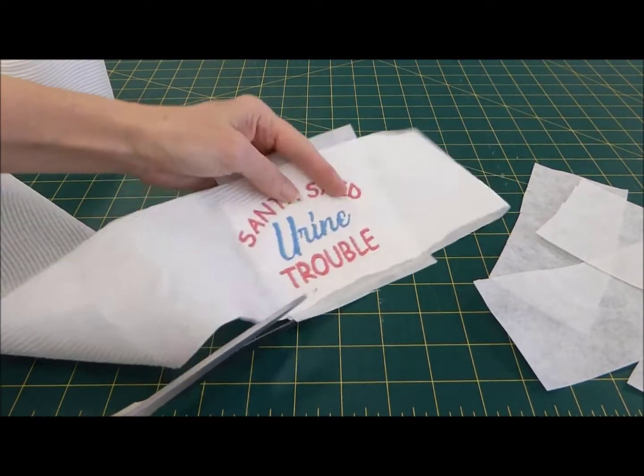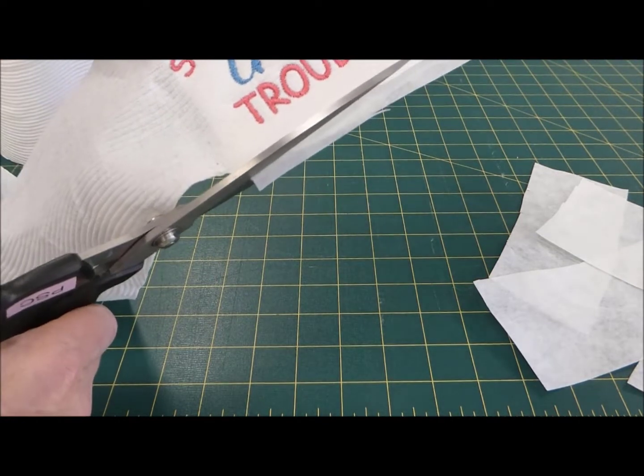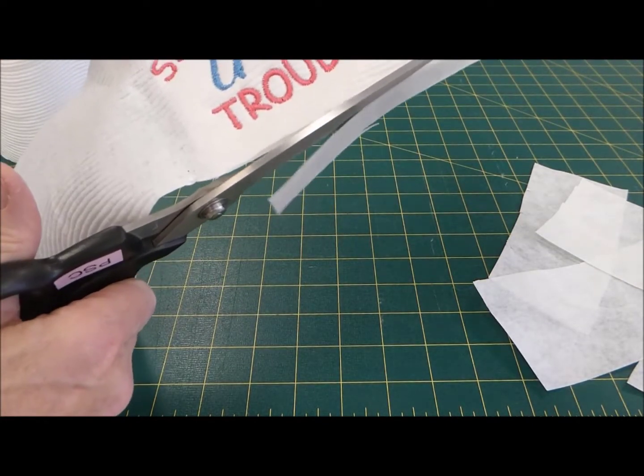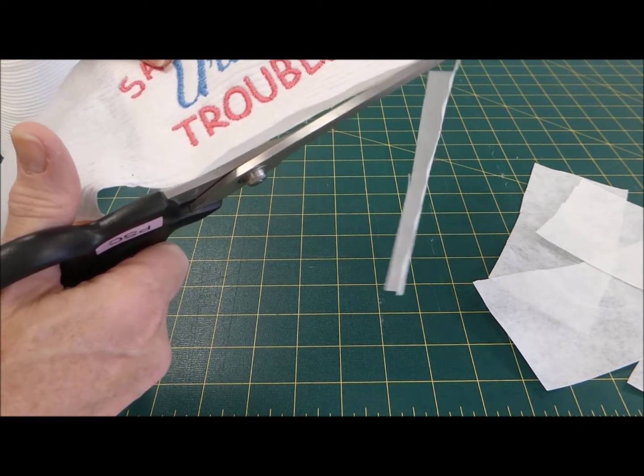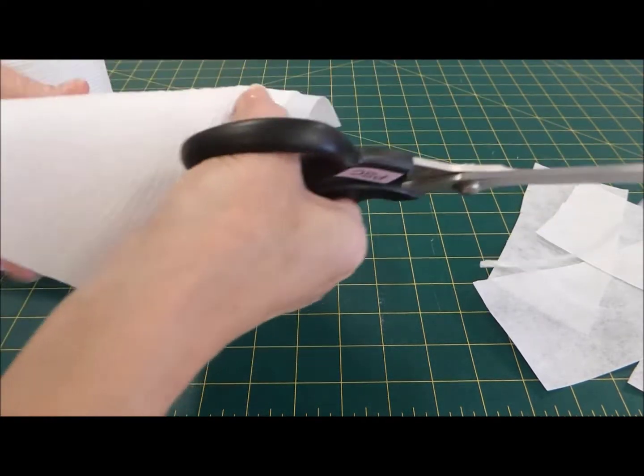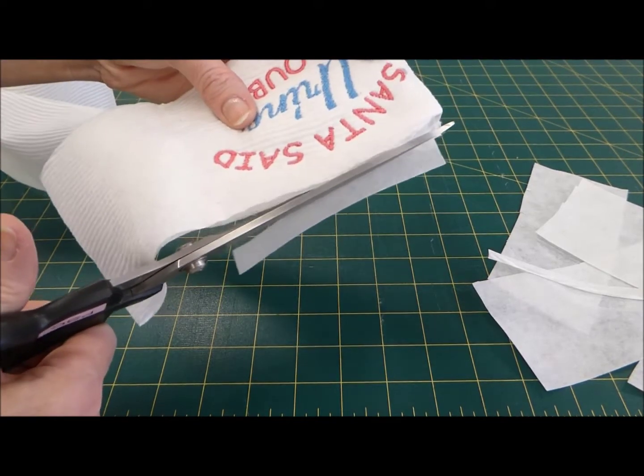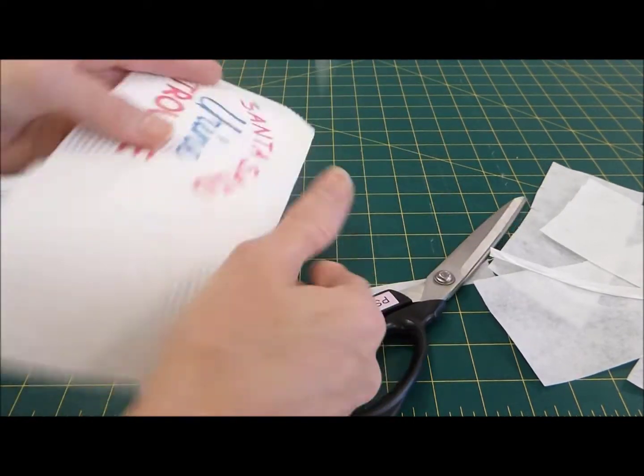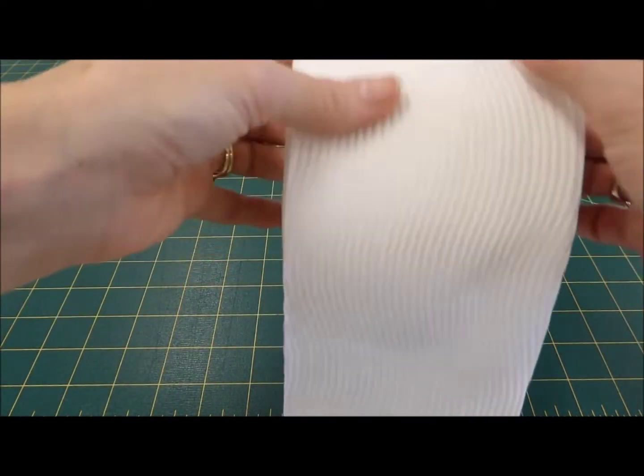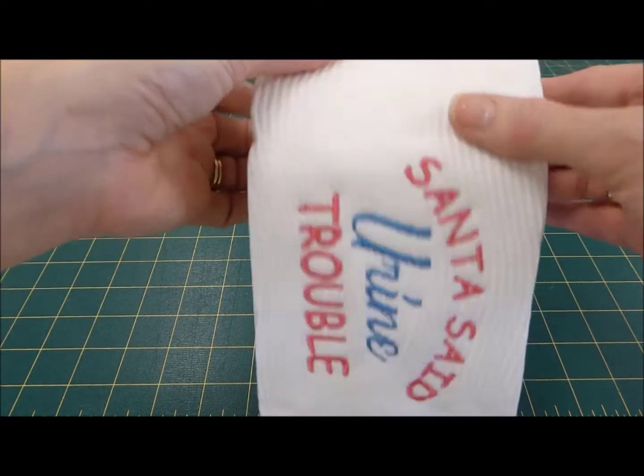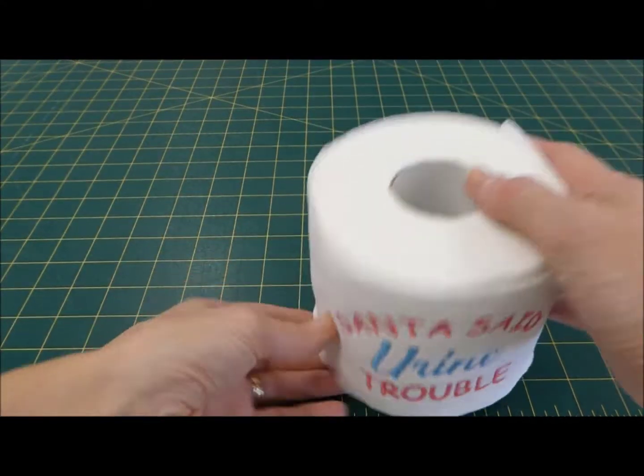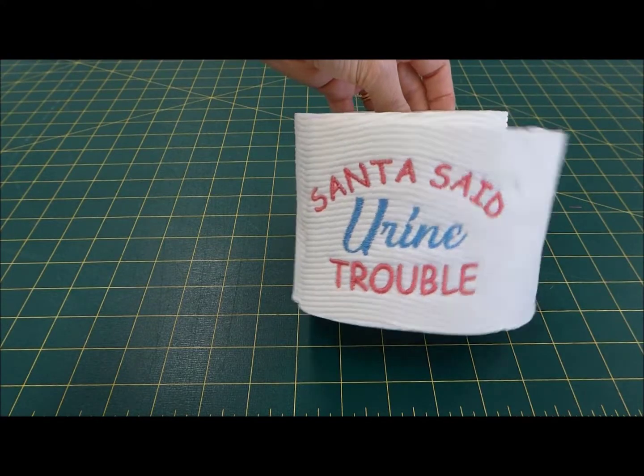And then it's just a matter of giving it a nice straight edge along the bottom and along the top. Then simply roll your toilet roll back up and there you have your finished product.